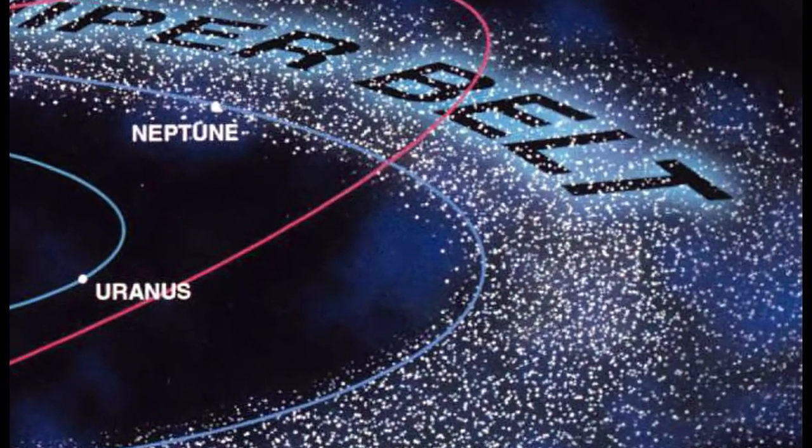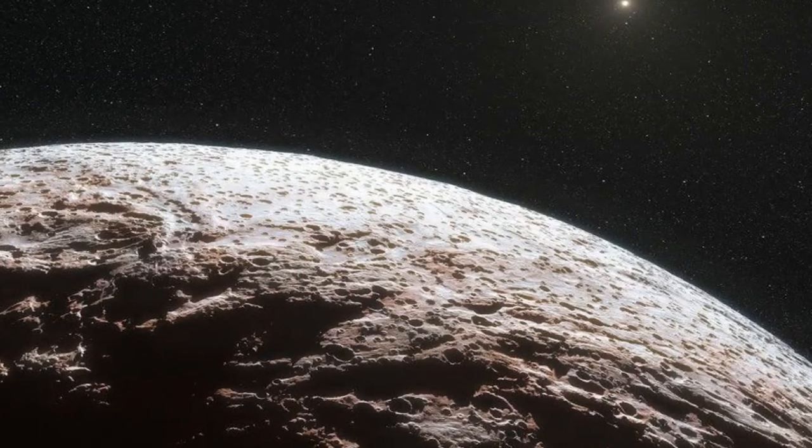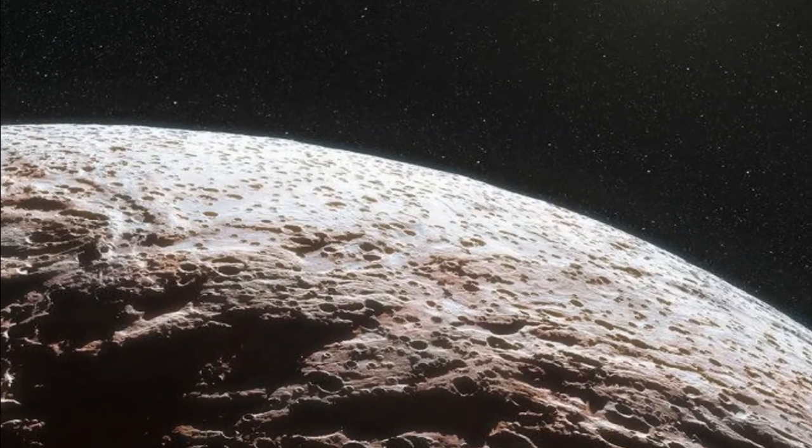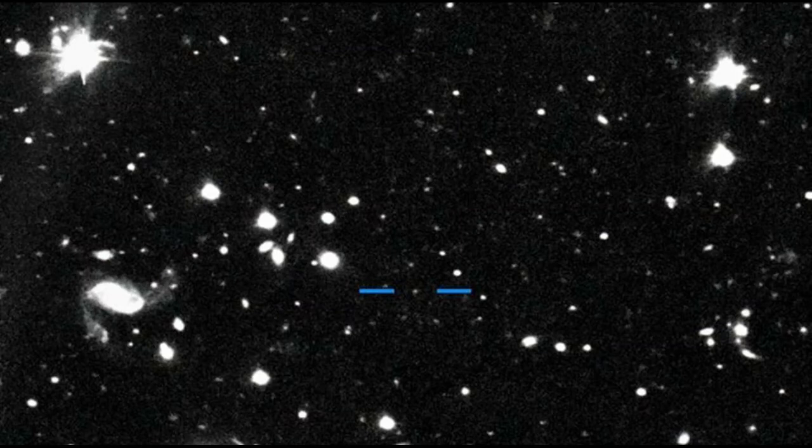Even though some of these distant objects are quite large, they are very faint because of their extreme distances from the sun. Far Far Out is just the tip of the iceberg of objects in the very distant solar system.